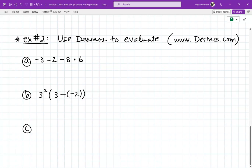So, A is going to be negative 3 minus 2 minus 8 times 6. Part B is going to be 3 squared times 3 minus a negative 2. And then part C, again, I'm not leaving any space because I'm not going to do any work. I'm just going to punch it in and it's going to give me an answer. And I'm going to write it down. I'm going to move on.